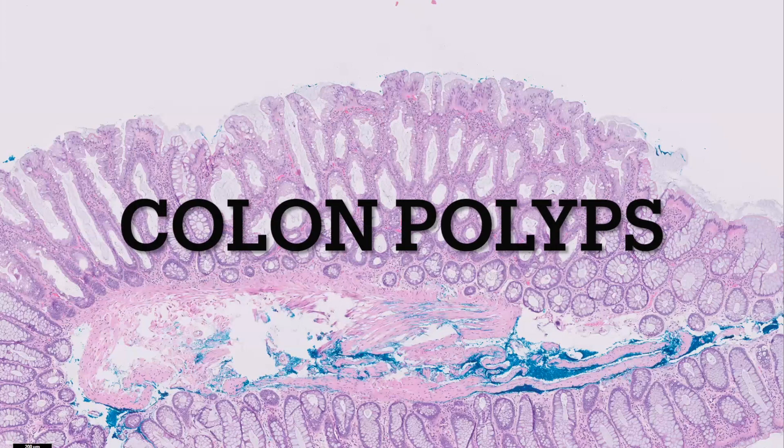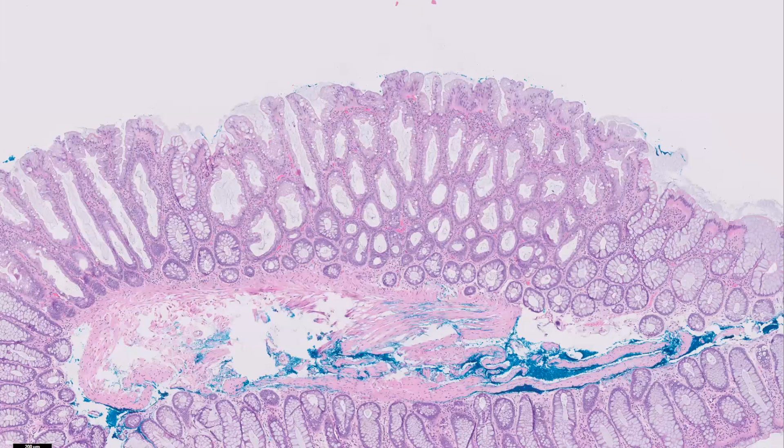As any pathologist or resident rotating on GI service knows, colon polyps are going to be the majority of what you see. Today I am going to cover some of the more common ones and I'll toss in a few that I personally really like. I'll cover hyperplastic polyps, tubular adenomas, mucosal prolapse polyps, sessile serrated polyps, and traditional serrated adenoma.